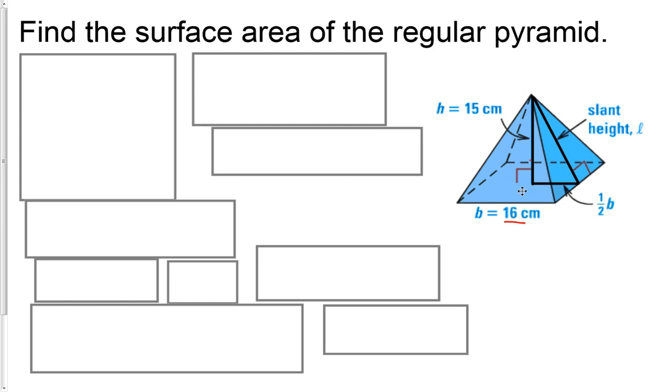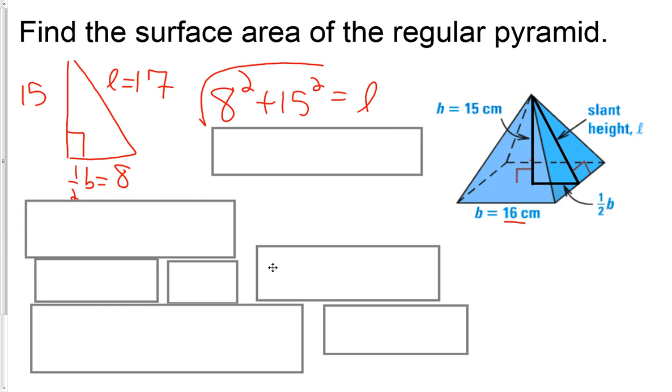We've got H is 15, this part is 8. Slant height L squared equals 8 squared plus 15 squared. We're going to square root this right away and we get 17. Sorry, I already had it filled in up here, but that's where the work comes from.